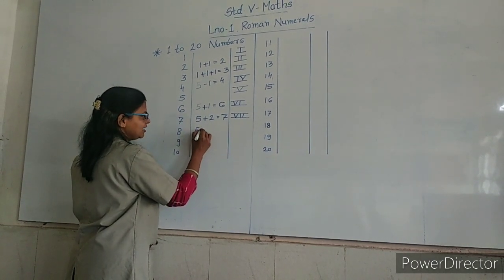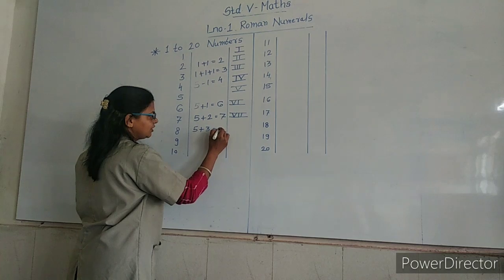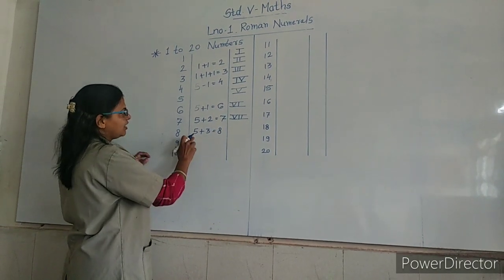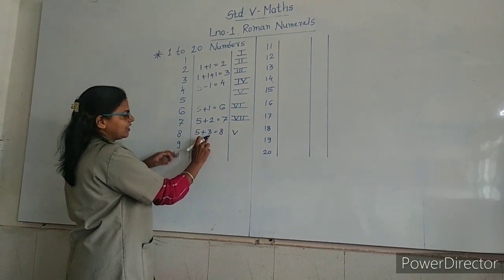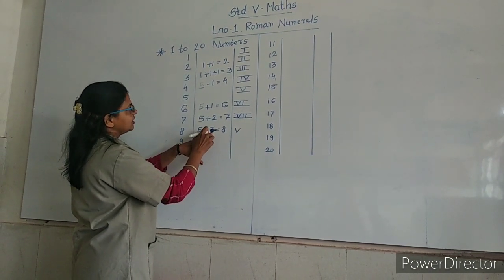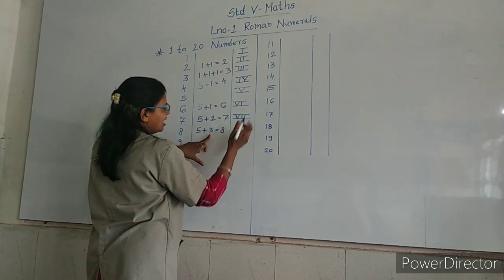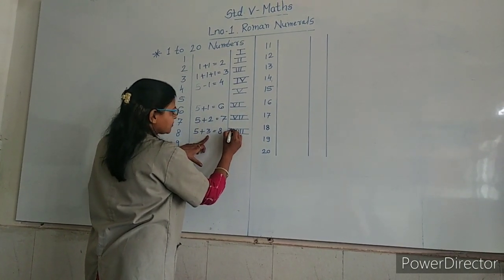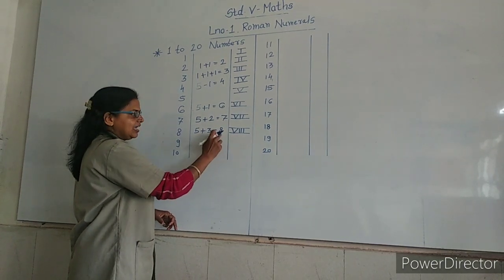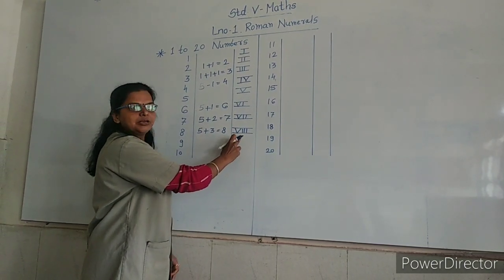Now, 8: 5 plus 3 is equal to 8. 5 is V. So write V. 3: where have you written 3? Here—triple I. So, V triple I. 8 is VIII.